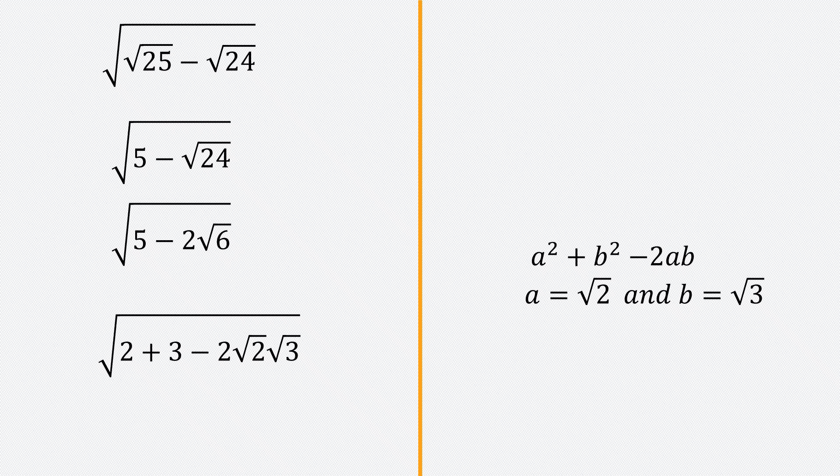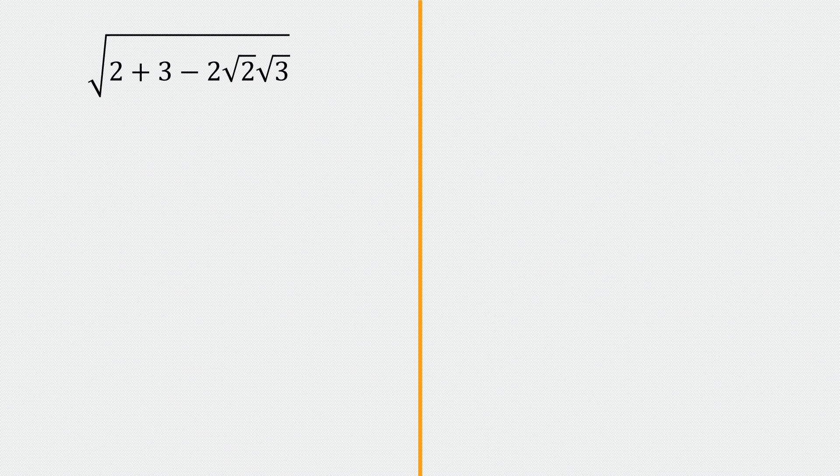So I have the square root of 2 plus 3 minus 2 root 2 times root 3. So at this point, what we are going to do is bring back the identity, which is a squared plus b squared minus 2ab. And that's equal to a minus b squared.